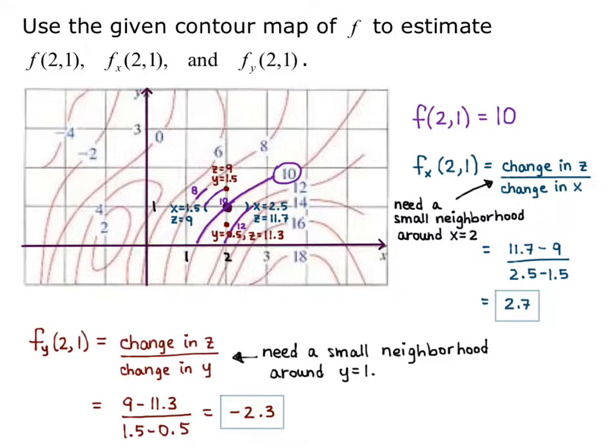So what that means, that's the slope of the ground if I went north from my point. So the change in z over change in x is uphill to the east with a slope of 2.7. The change in z over change in y is downhill to the north because it's negative.